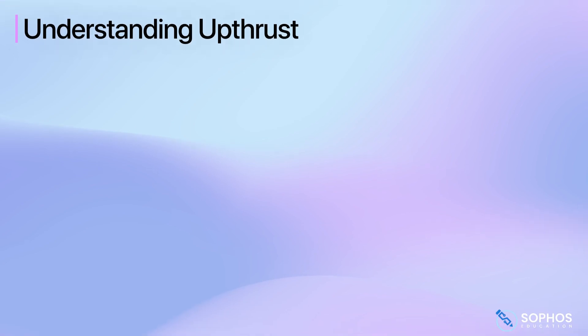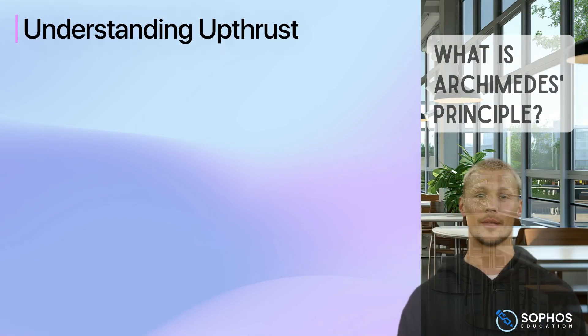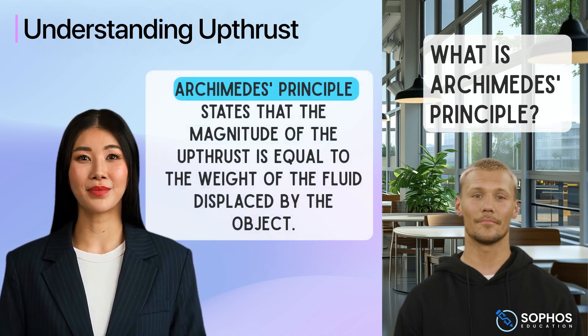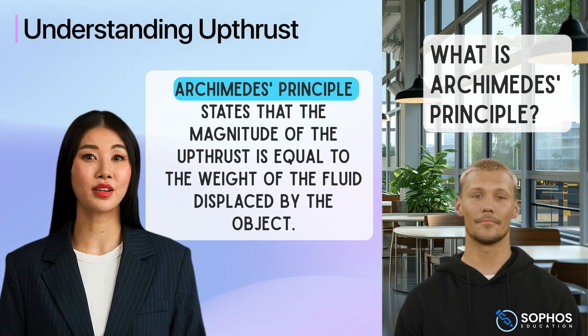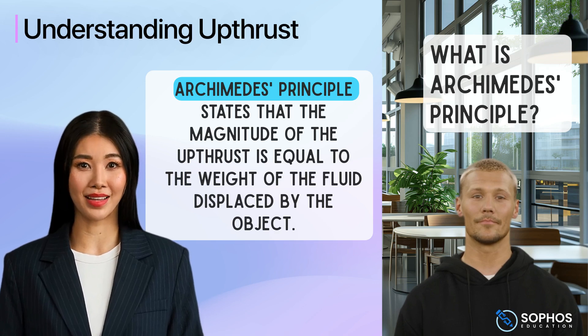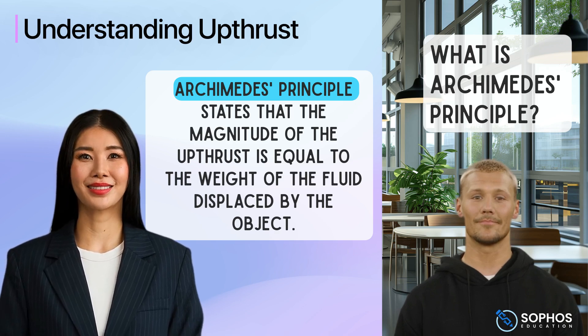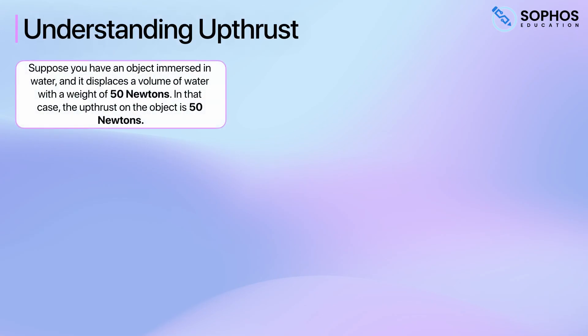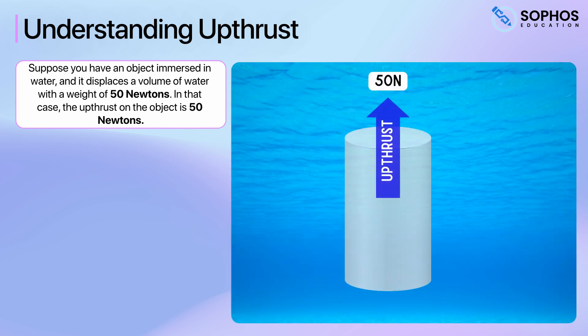To quantify upthrust, we use Archimedes' principle. Archimedes' principle states that the magnitude of the upthrust is equal to the weight of the fluid displaced by the object. For example, suppose you have an object immersed in water and it displaces a volume of water with a weight of 50 newtons. In that case, the upthrust on the object is 50 newtons.